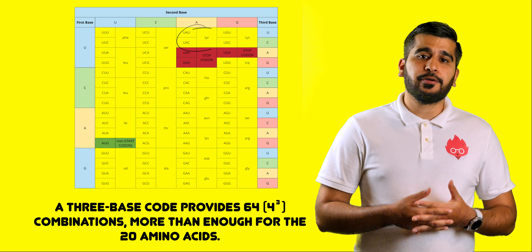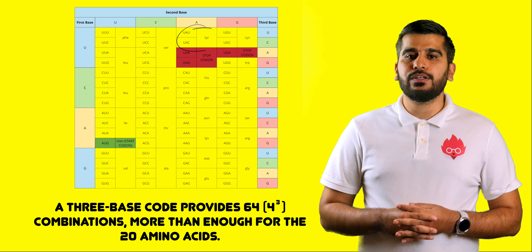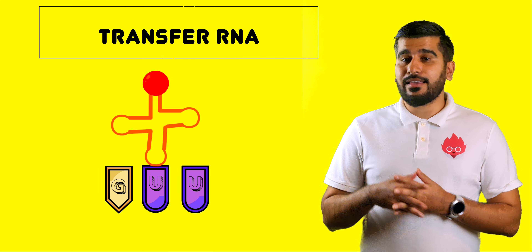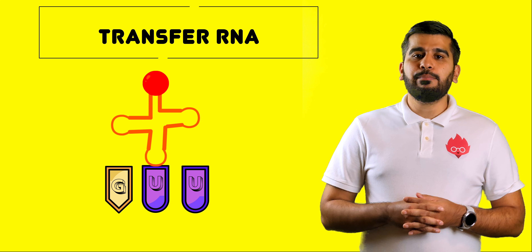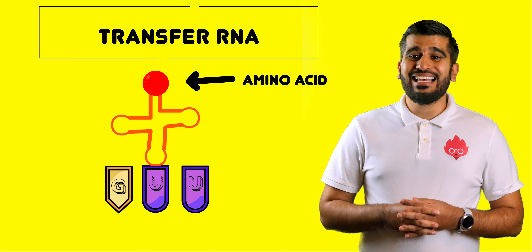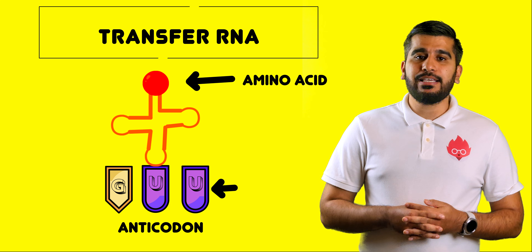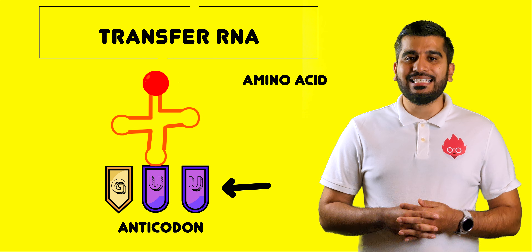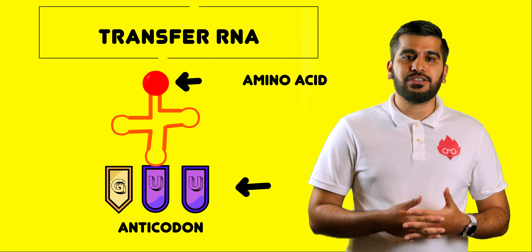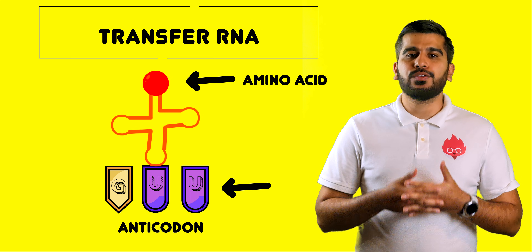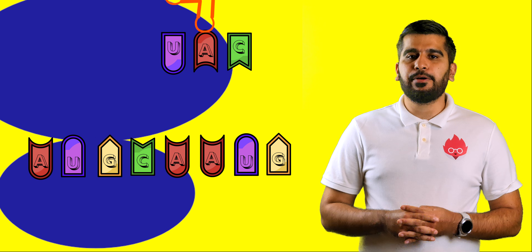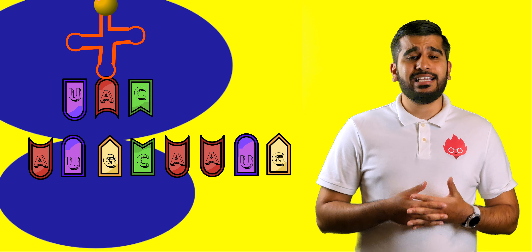For example, tyrosine will have the triplet codon U, A, U. tRNA has two important regions: at the top is the amino acid, and at the bottom it has three bases called the anticodons. These anticodons bind in a complementary fashion to the codons on mRNA. tRNA binds at the start codon on mRNA, which is usually AUG.